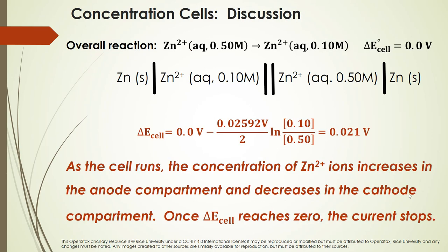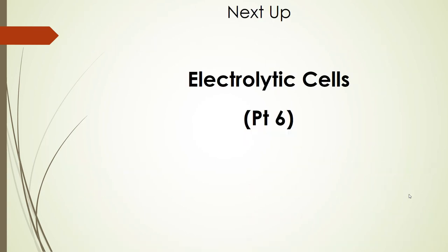As the cell runs, the concentration of zinc 2+ ions increases in the anode compartment and decreases in the cathode compartment. Once the overall cell potential reaches 0, the current stops. Next up will be electrolytic cells — Electrochemistry Lecture Part 6.